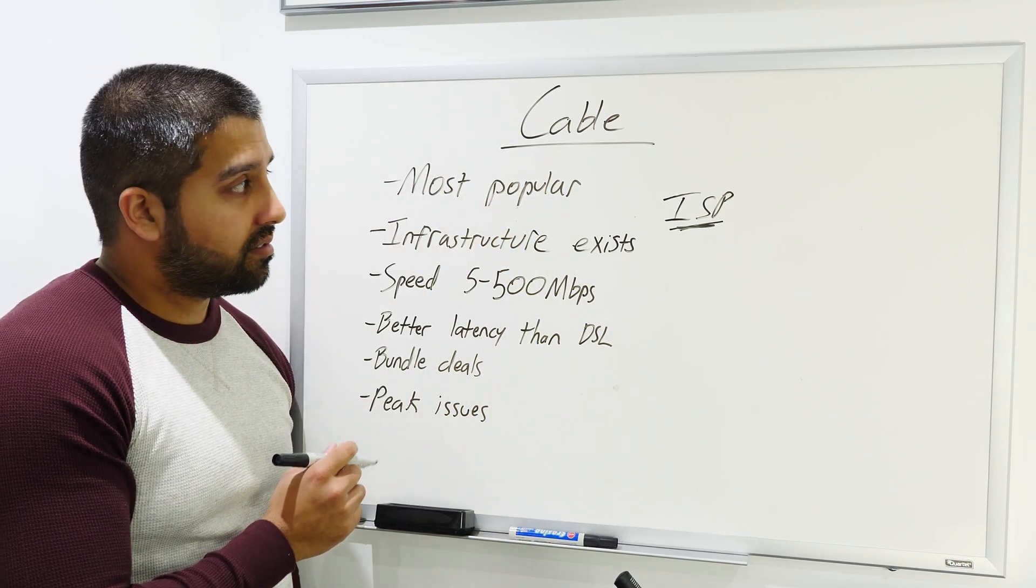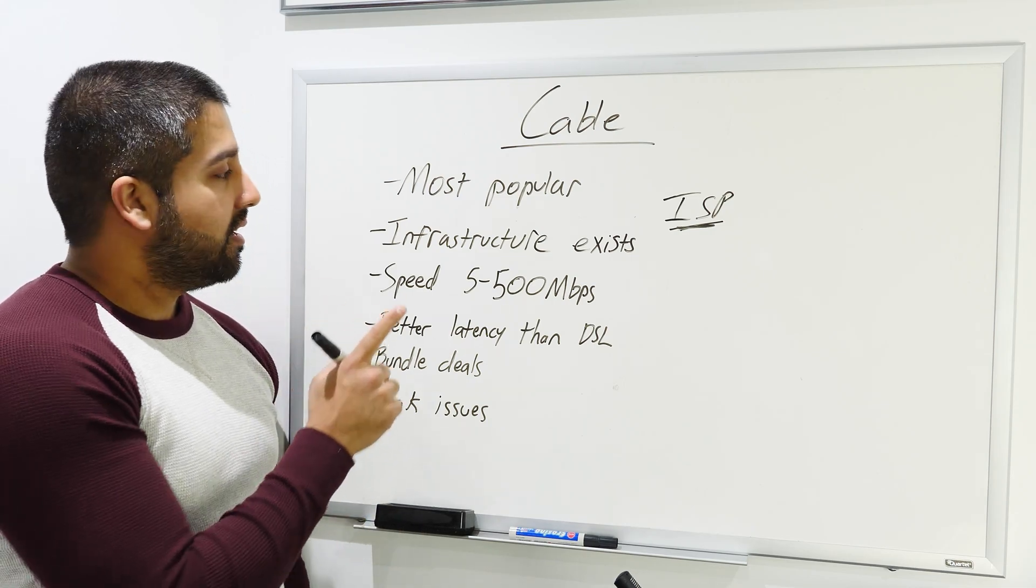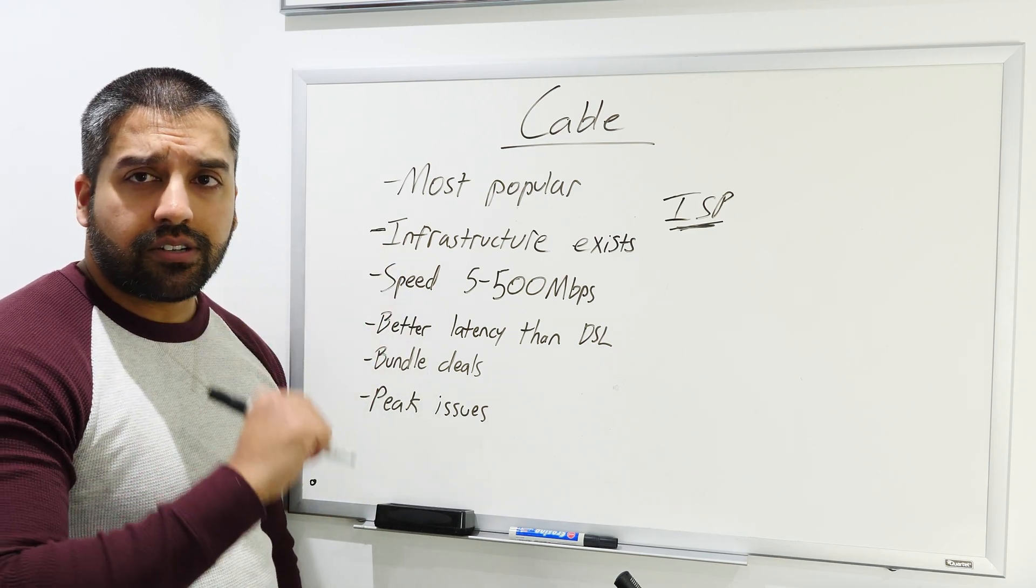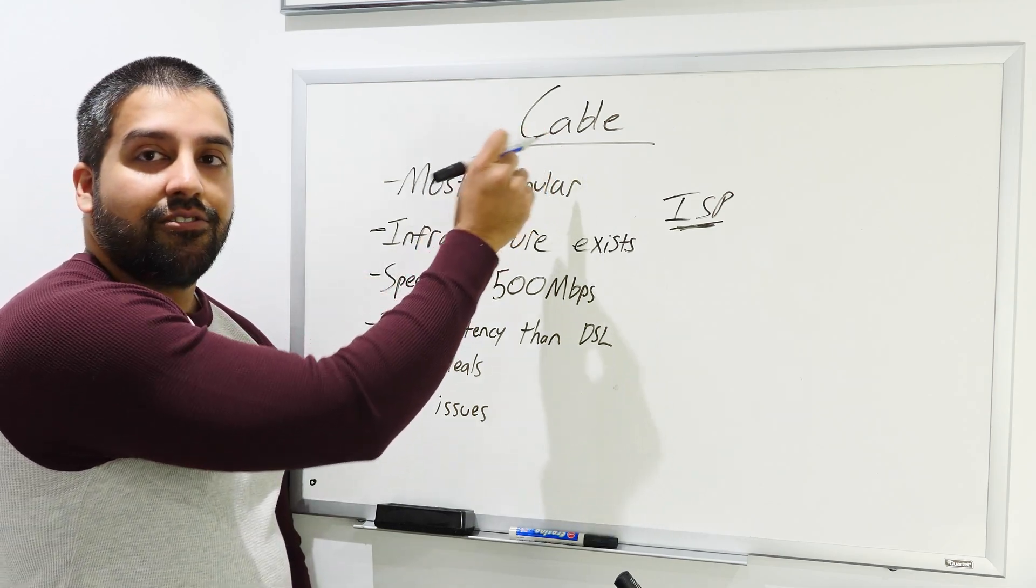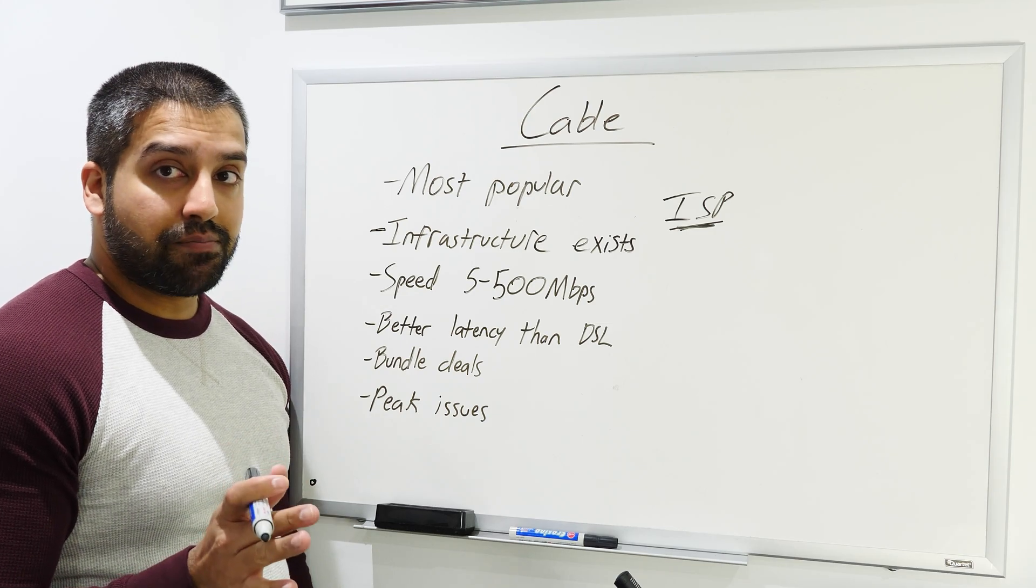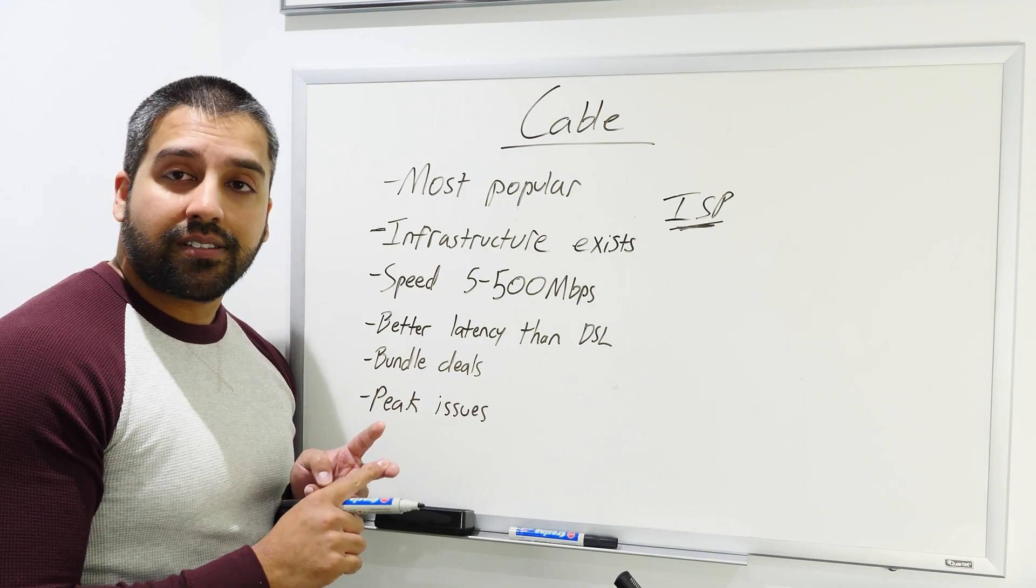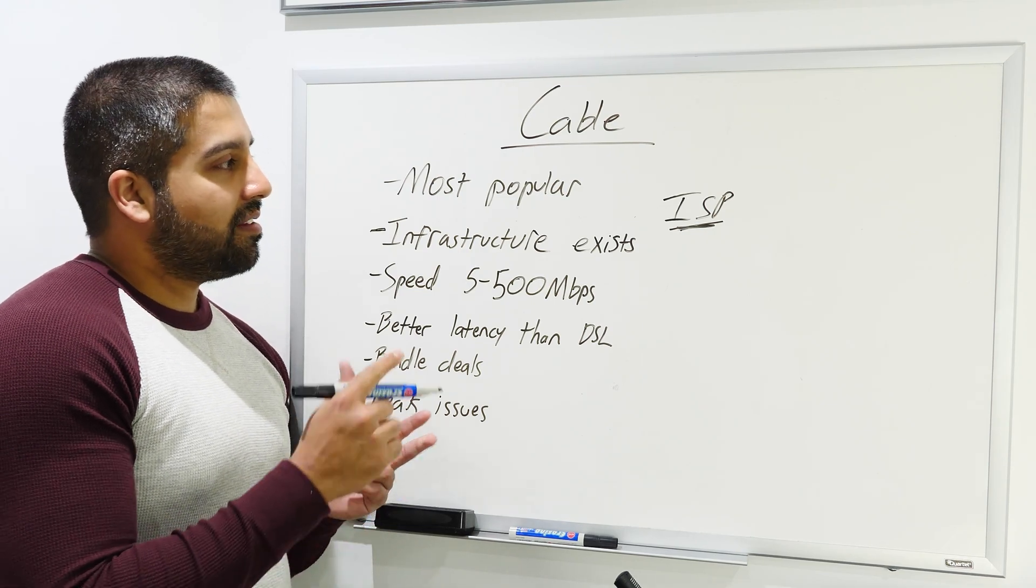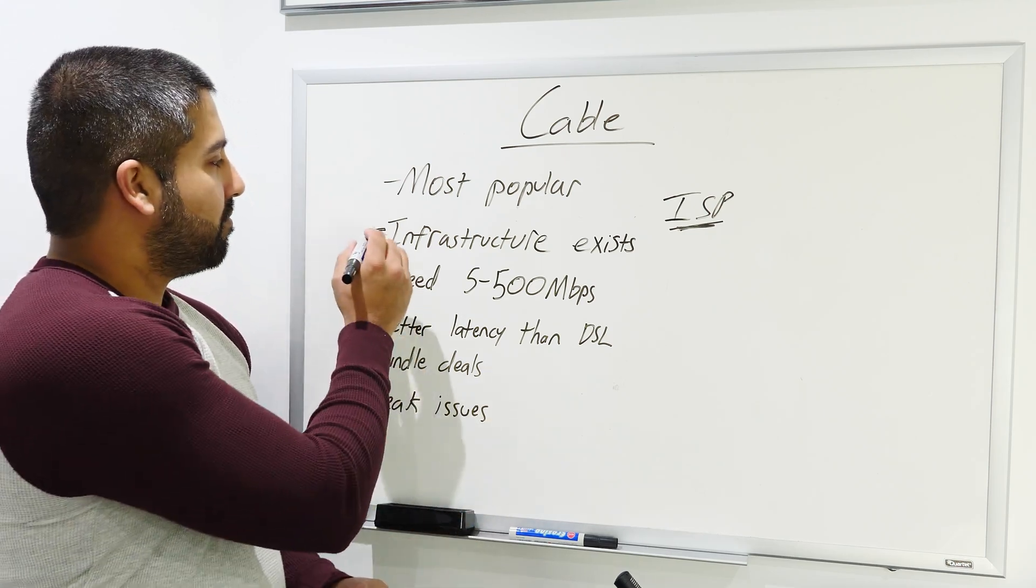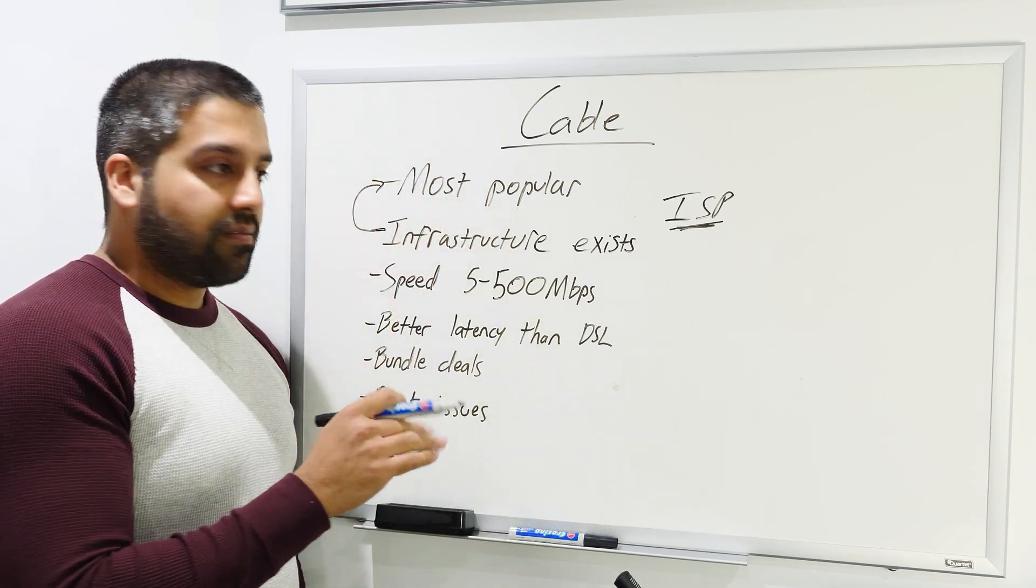Cable internet is the most popular here in North America. It's the most easily available, not for everybody but for many people, and there's a reason for that. It's because the infrastructure already exists. Cable internet uses the exact same coaxial cable as your cable TV. If you have cable TV service, it's coming in through a coaxial cable, so the infrastructure is already there.